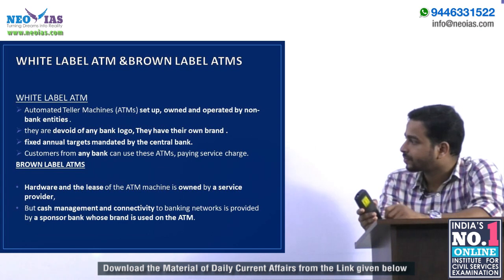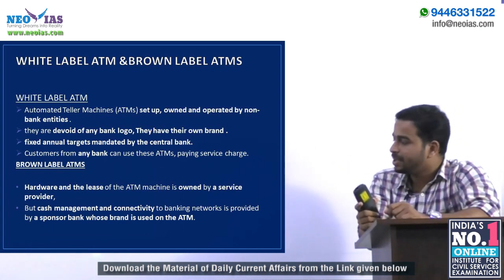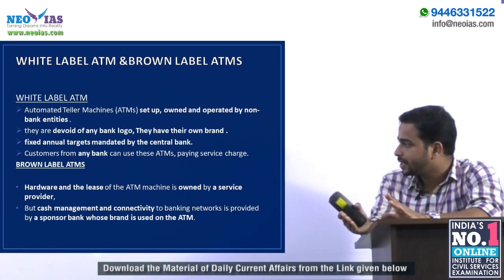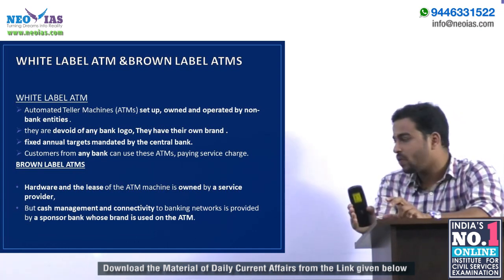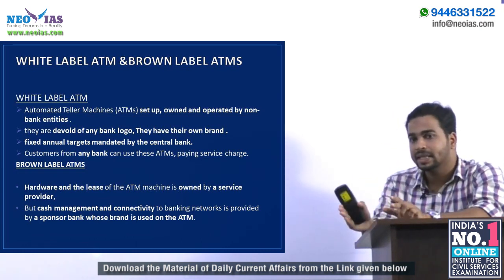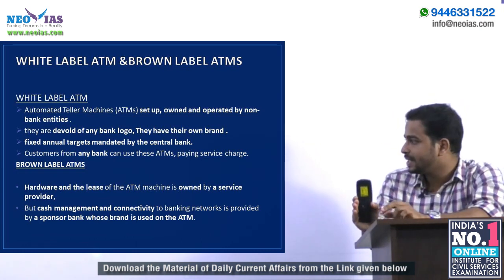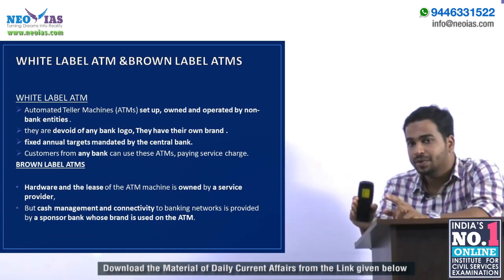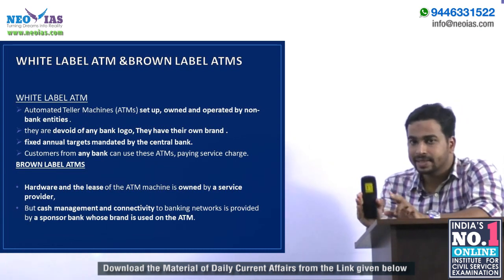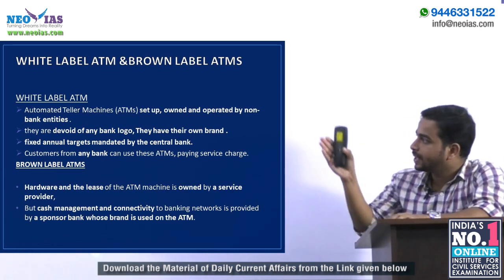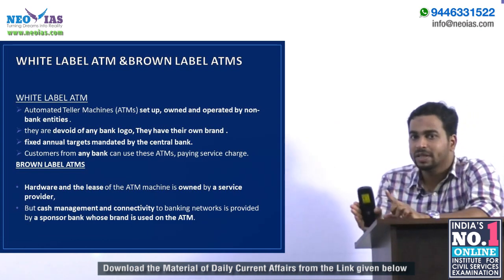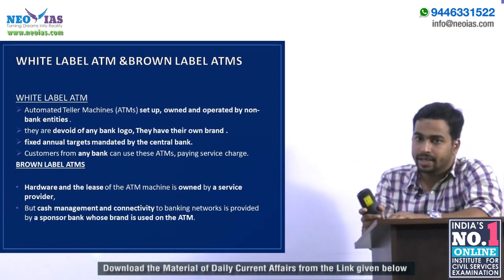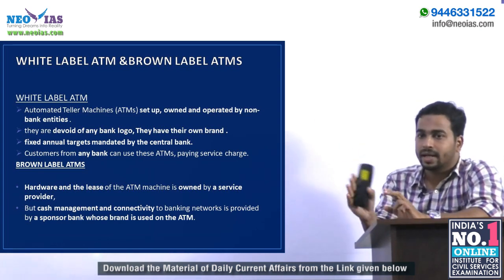In a Brown Label ATM, the hardware and lease is owned by a separate entity or service provider, but a sponsor bank sets up its banking network and manages cash management and connectivity. The brand name of the sponsor bank is displayed on the ATM, unlike White Label ATMs which only carry the logo of the non-bank entity.